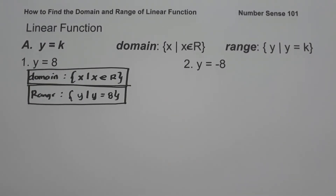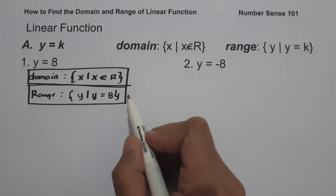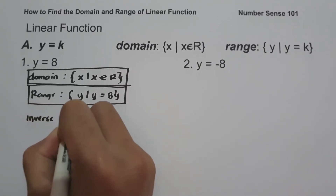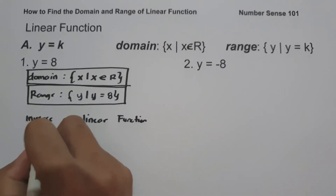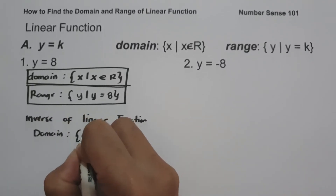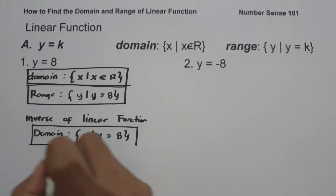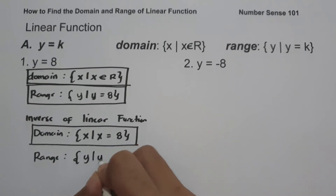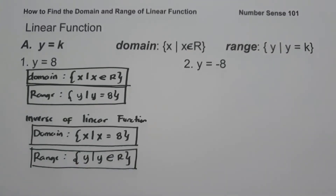To find the domain and range of the inverse linear function, always remember: the domain of the original function is the range of the inverse function, and the range of the original function is the domain of the inverse function. So for the inverse function, the domain is the set of x values such that x equals 8, and the range is the set of values of y such that y is the set of all real numbers.